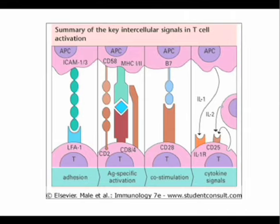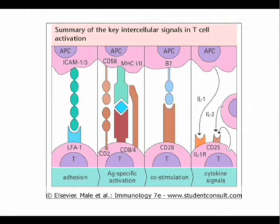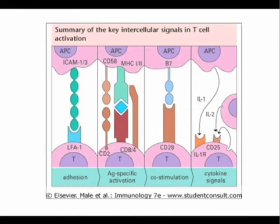This is a summary of the series of interactions that need to happen. First, adhesion of the antigen presenting cell to the T cell. Then the antigen-specific interaction between MHC class 1 or 2 with the TCR-CD3 complex, and the co-receptor CD8 or CD4 interacting with the constant region of the MHC molecule. Then co-stimulation: CD28 expressed by the T cell interacting with CD80 or CD86 expressed by the APC. If all of these things happen, you get cytokine secretion, activation of transcription factors like NFAT that secrete IL-2.